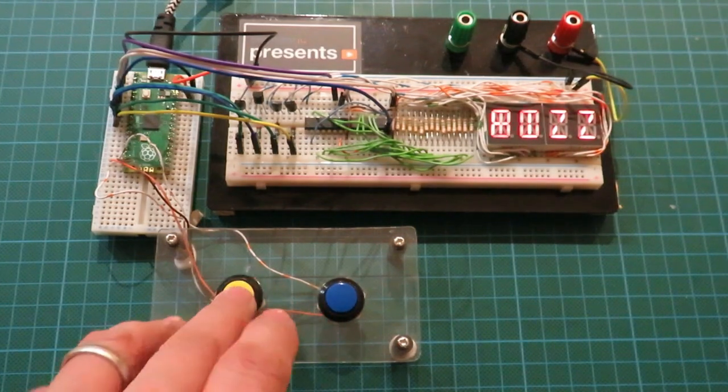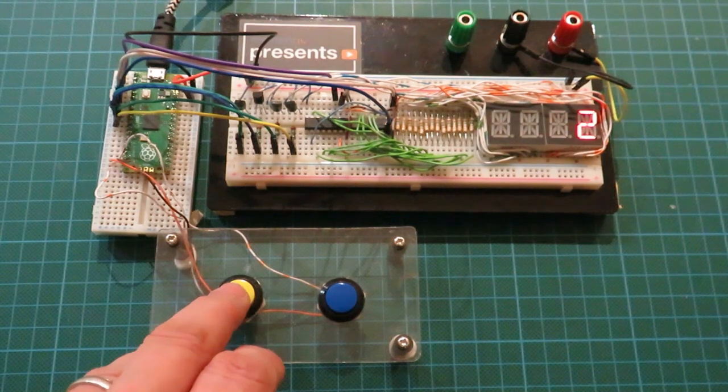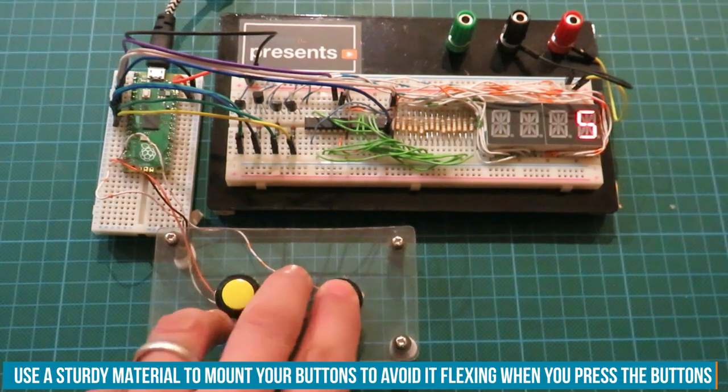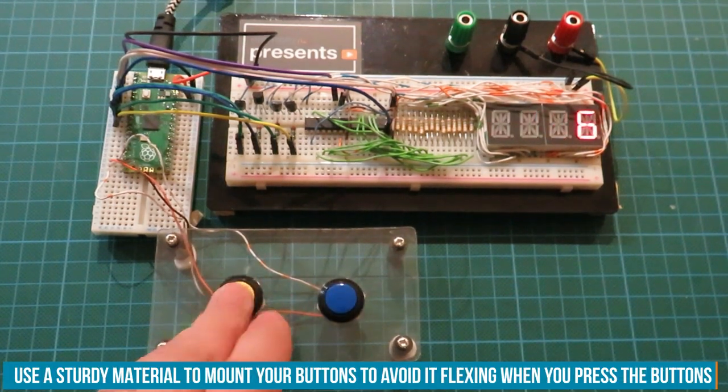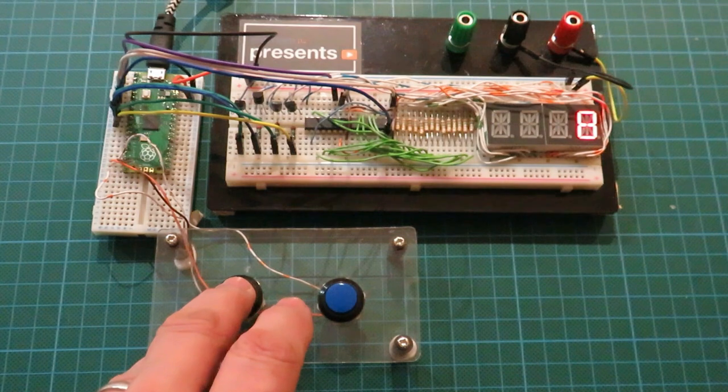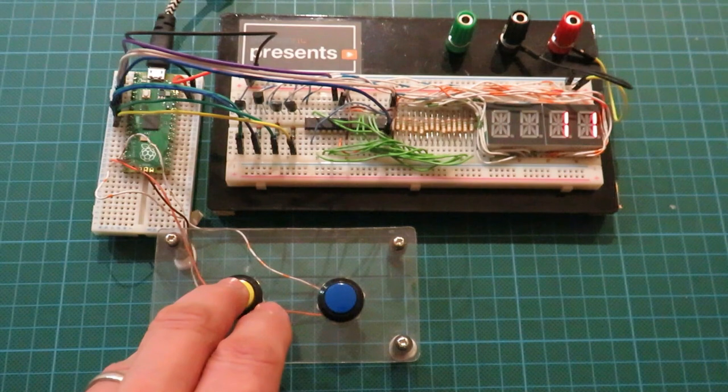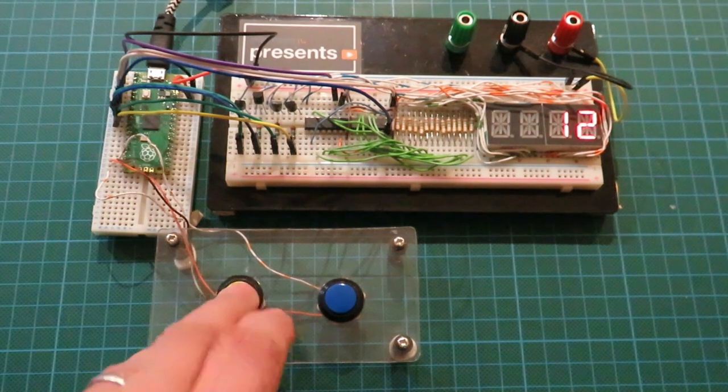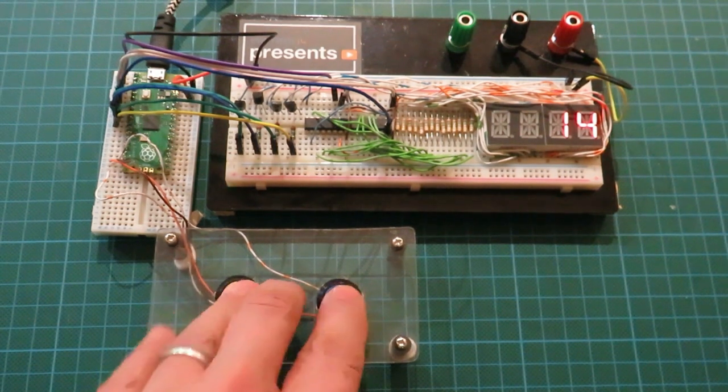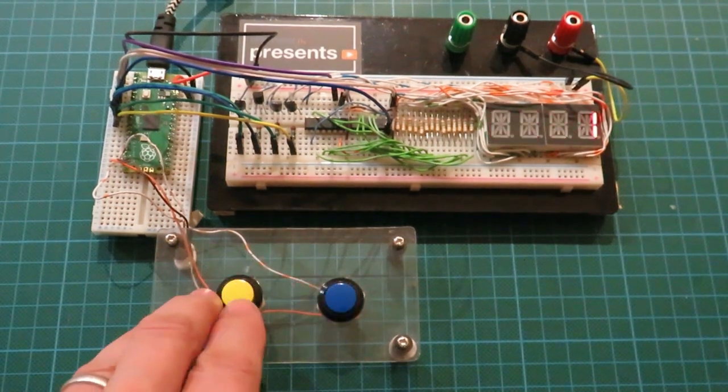Okay let's play the game. 1, 2, Fizz, 4, Buzz, Fizz, 7, 8, Fizz, Buzz, 11, Fizz, 13, 14, FizzBuzz. FizzBuzz. Ah, too slow.